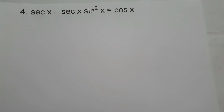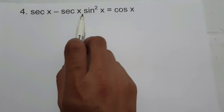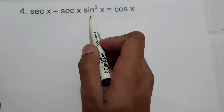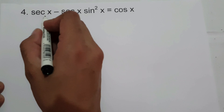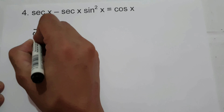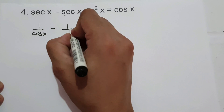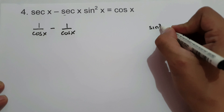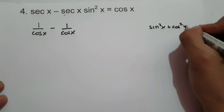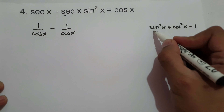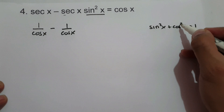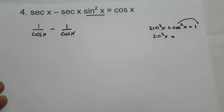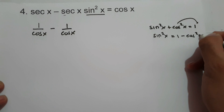On example number 4, we are going to prove secant x minus secant x times sin squared x equals cosine x. In order for us to do that, let us change secant x in terms of 1 over cosine x, minus 1 over cosine x. And let us find the value of sin squared x. So if we have sin squared x plus cosine squared x equals 1, and we want to find the value of sin squared x, let us move cosine squared x to the side of 1. That is sin squared x equals 1 minus cosine squared x.